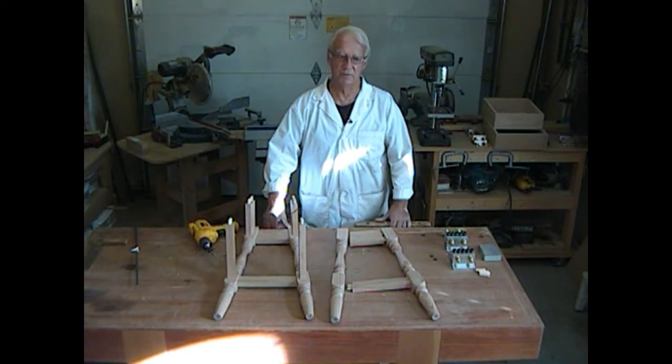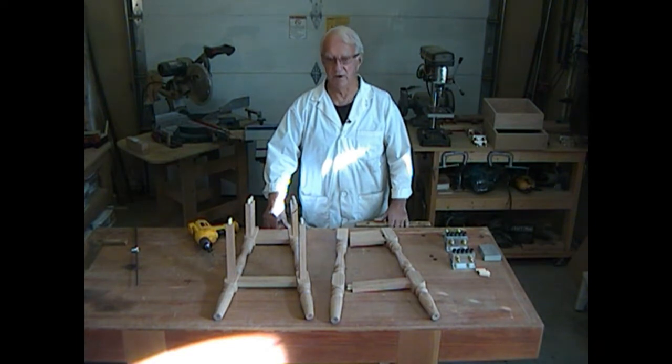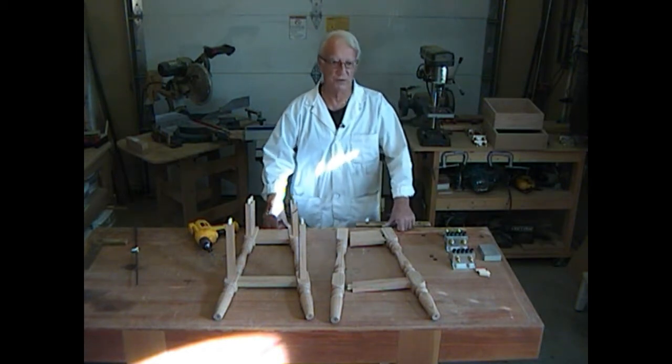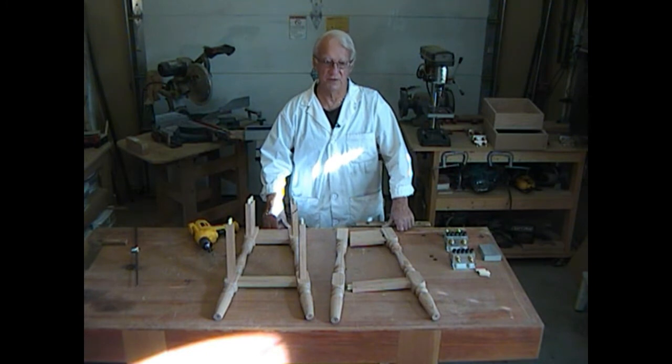To center on the 7 eighth rail we first use the simple formula half thickness minus 3 eighths. So 7 eighths half equals 7 sixteenth minus 3 eighths equals 1/16. We therefore use and add a 16th spacer to center on the rail.